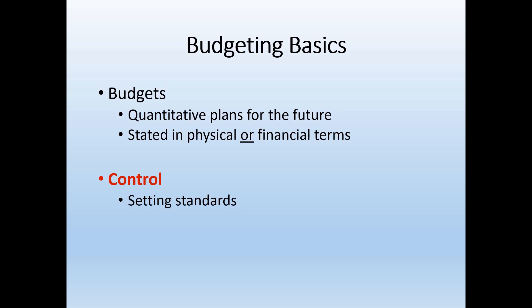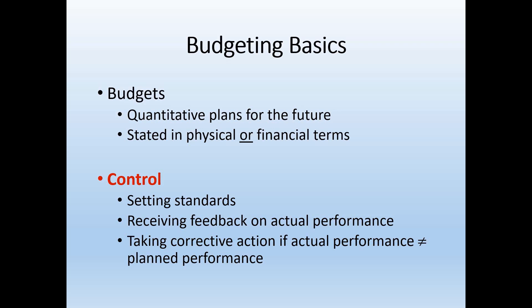The budget creates standards so that firm employees know what top managers expect of them. Then, at the end of the period, managers can compare what the budget expected to various departments' actual performance so that employees can receive feedback on whether their performance met expectations. Managers can take corrective action if actual performance was different — either by planning differently, retraining employees, or by changing their expectations if those expectations were unreasonable.